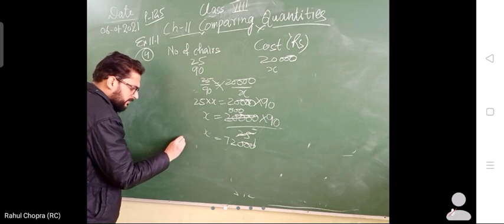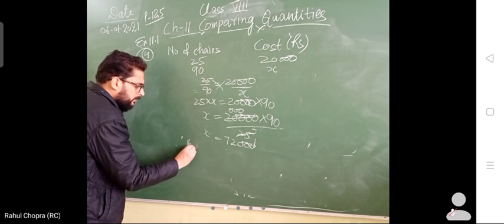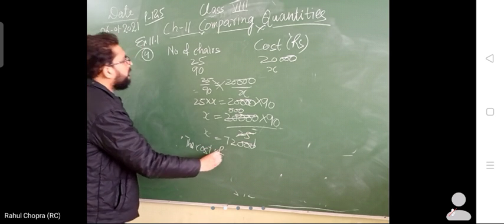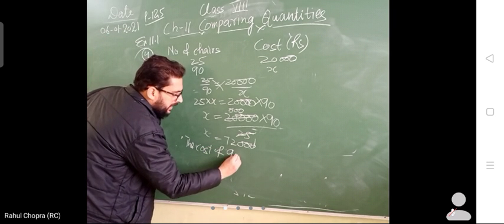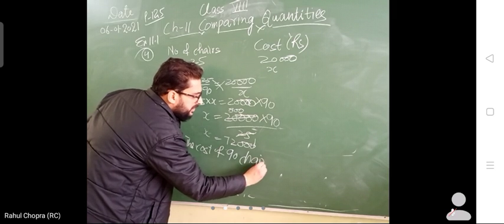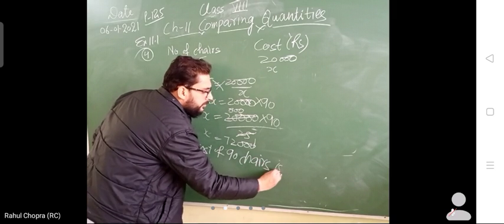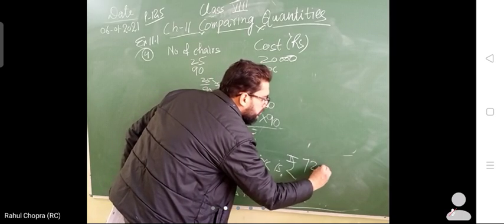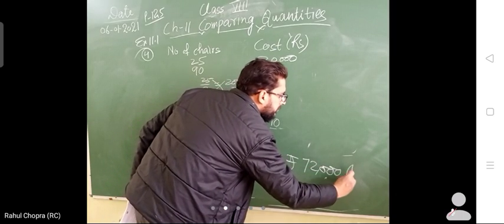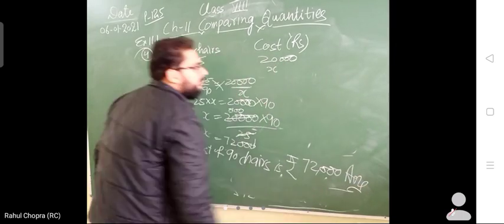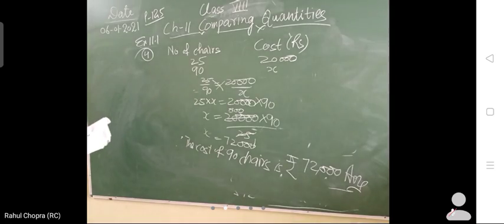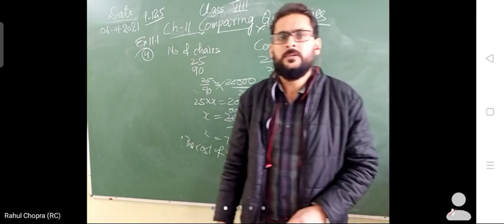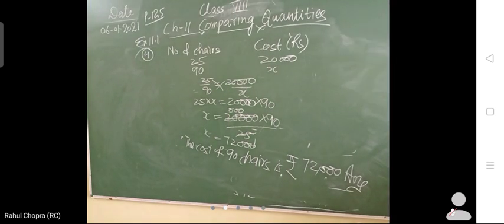In the last we will write: therefore, the cost of 90 chairs is rupees 72,000. Just go through it. So today, you have to do five questions of Exercise 11.1. That's all for today. Thank you.